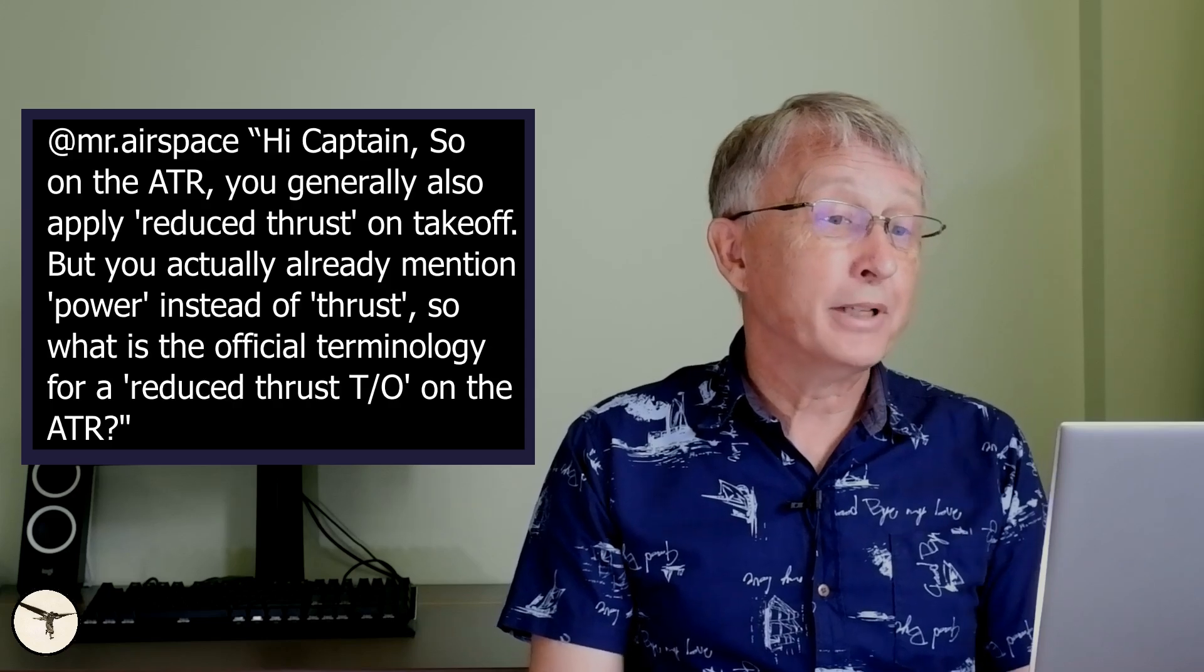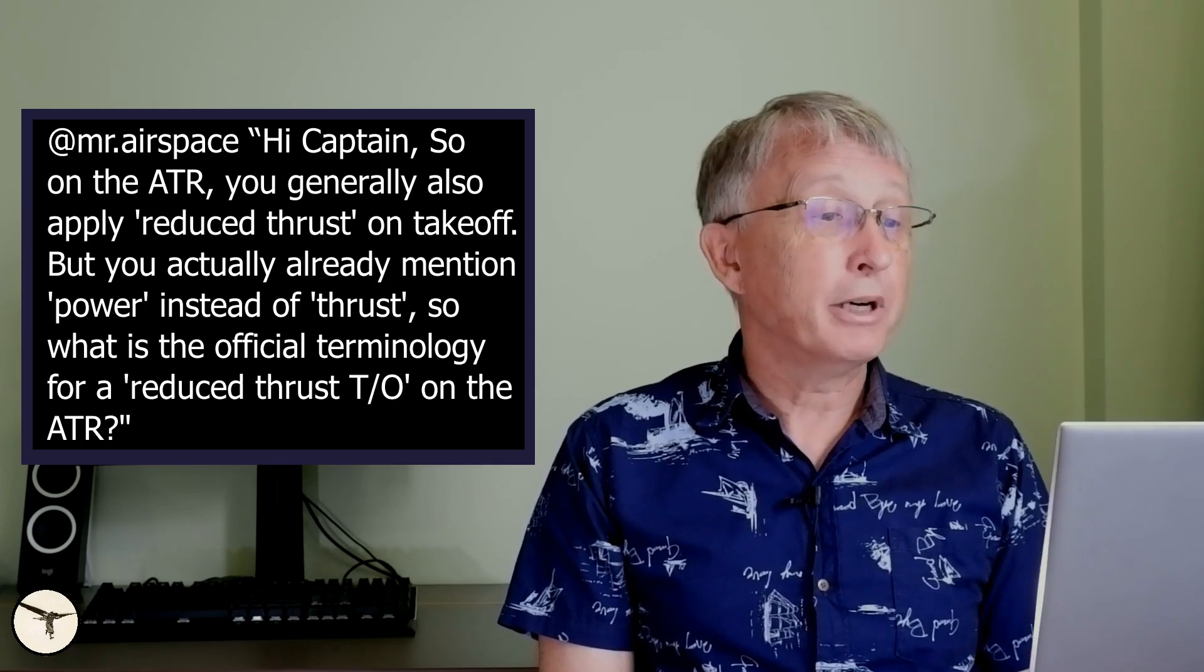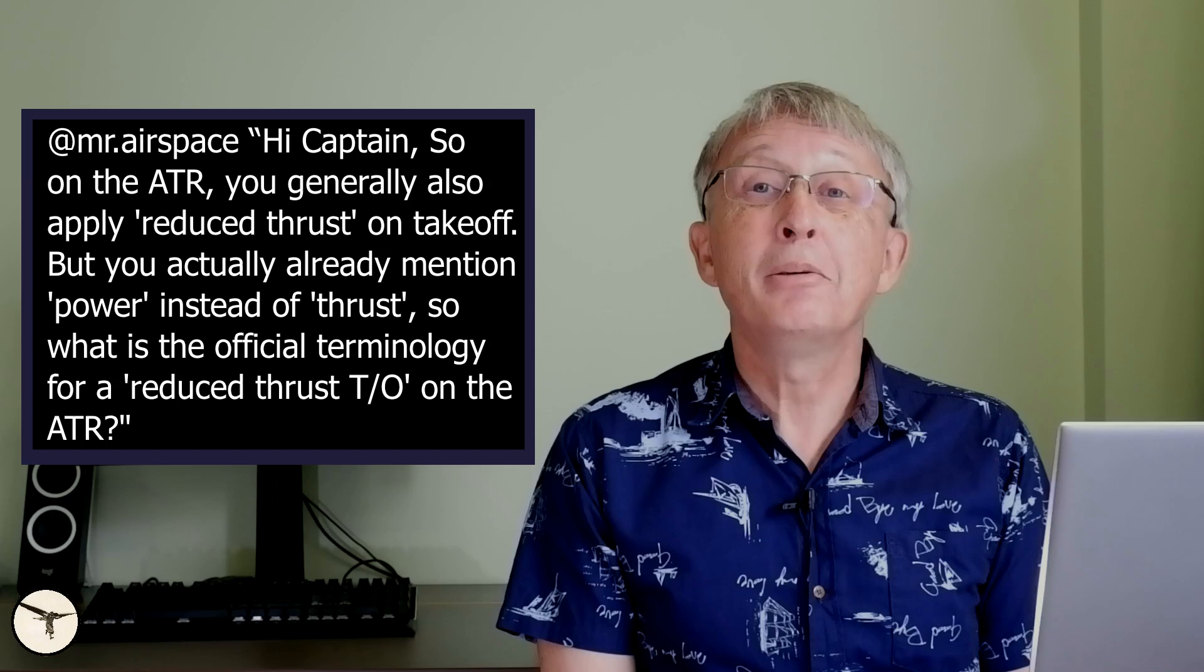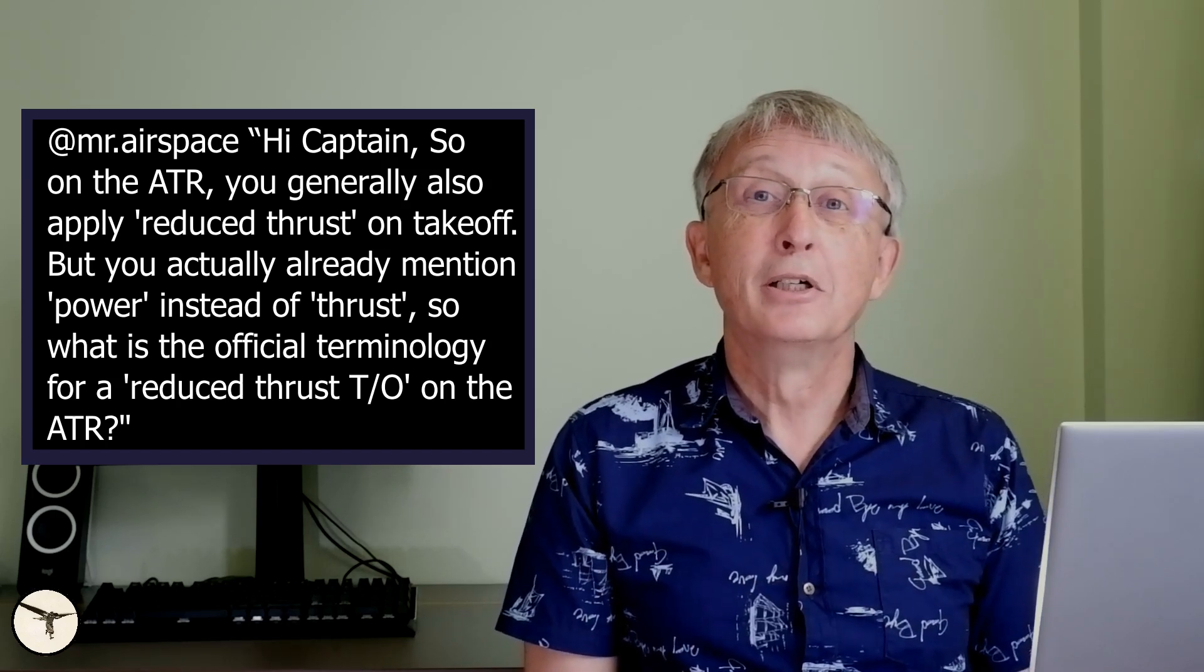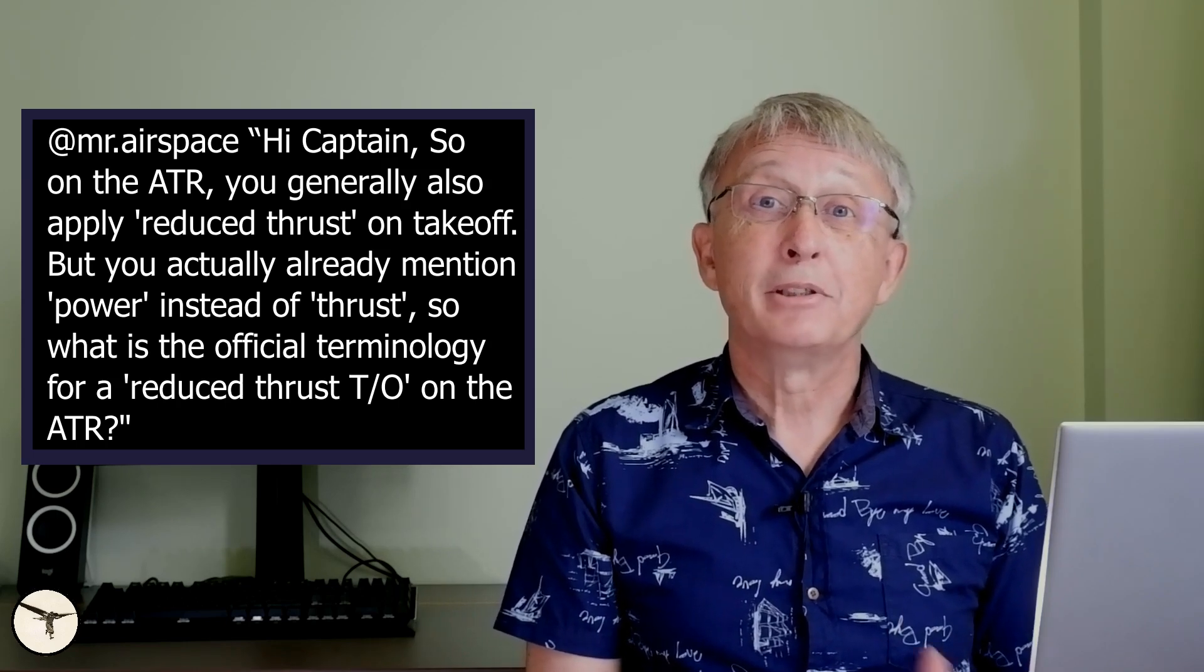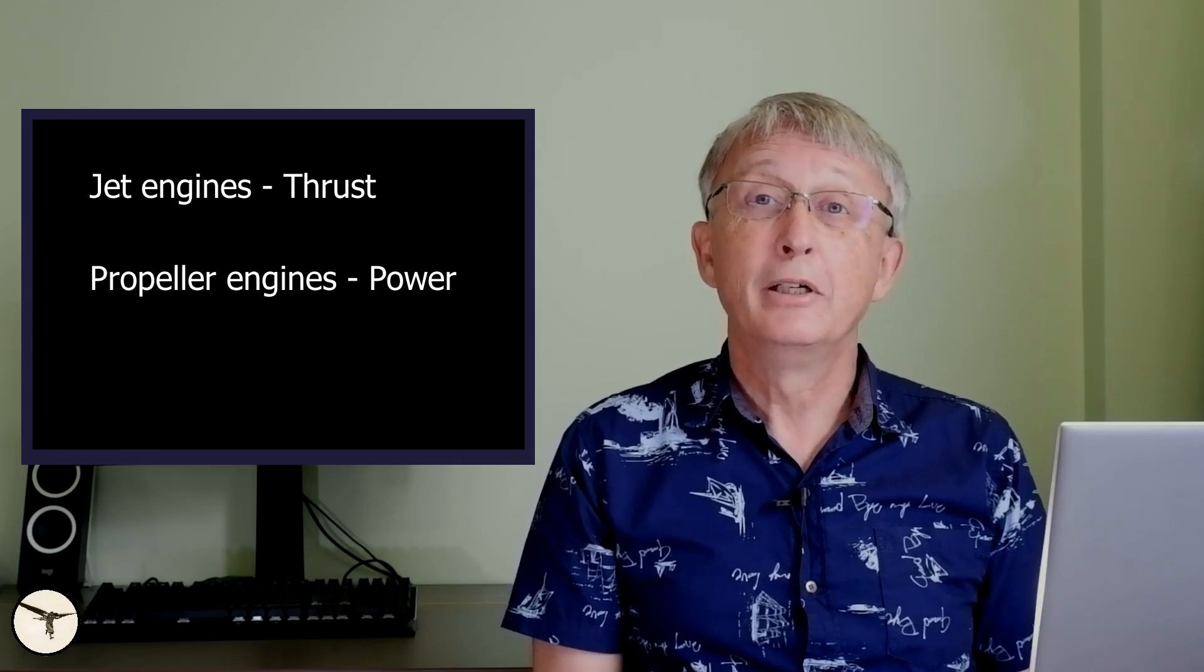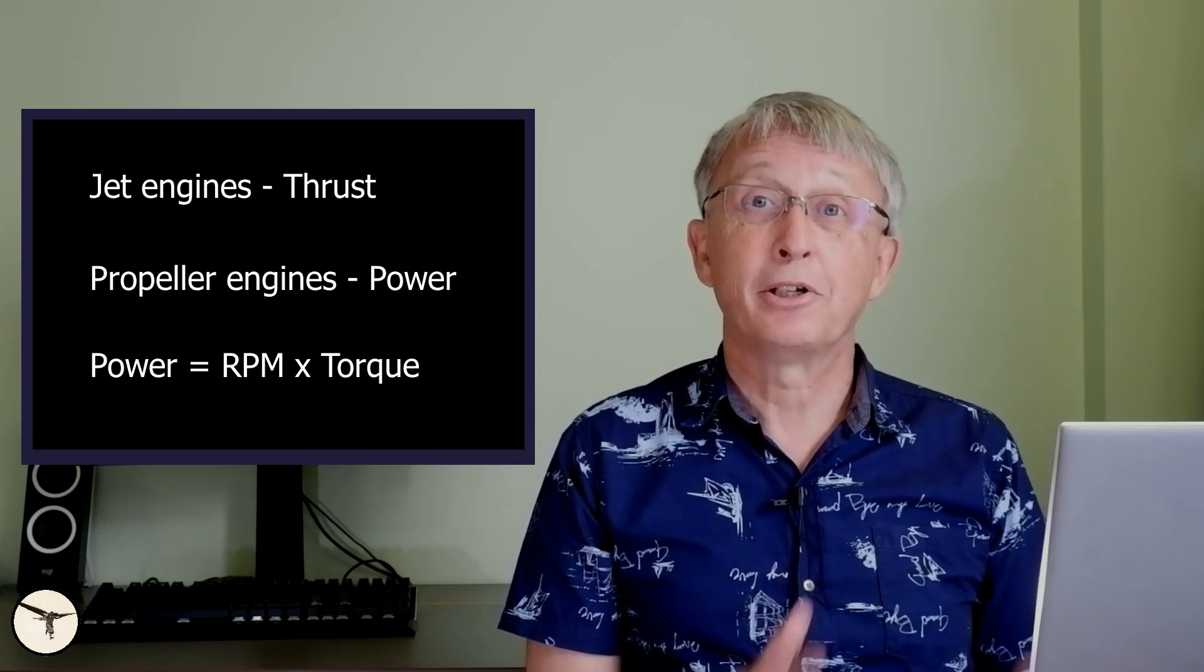Hi captain. So on the ATR you generally also apply reduced thrust on takeoff, but you actually mentioned power instead of thrust. So what is the official terminology for reduced thrust takeoff on the ATR? The normal terminology is power, because propeller aircraft are different from jet aircraft. On jet aircraft we say thrust, but on propeller aircraft we say power. The power is the RPM multiplied with the torque, just like on a car engine.